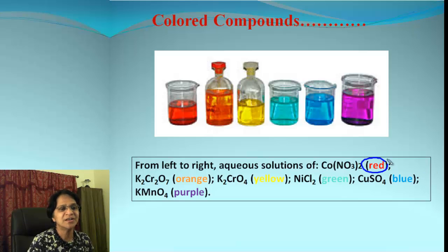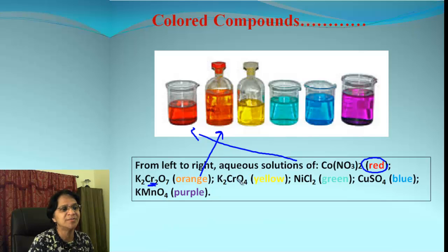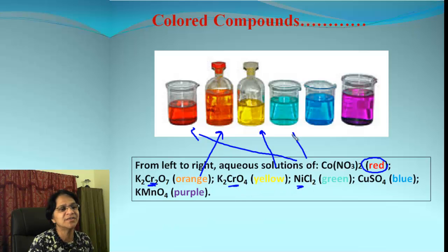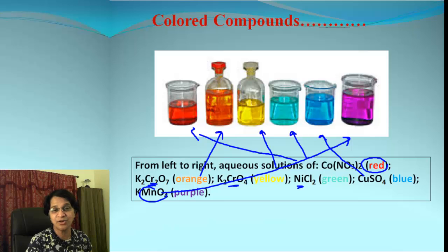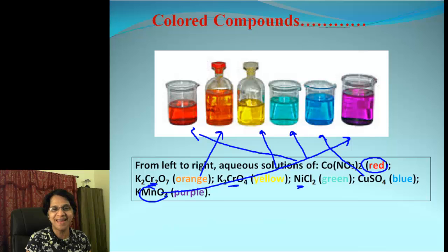Let's look at these beautiful colored compounds obtained from transition metals. We have red from cobalt, orange from chromium, yellow from chromium chromate, green from nickel, blue from copper, and purple from manganese. So chemistry is no doubt colorful! I hope you guys enjoyed the video — I will see you in the next one. Bye bye!